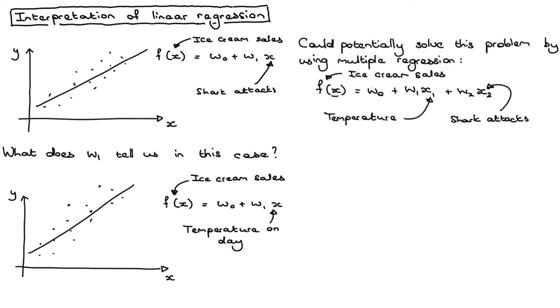You could try and address this problem a little bit by going to a multiple linear regression model where, for example, we're trying to predict ice cream sales, but not just based on the temperature of the day, but on both the temperature of the day, which we can now call X1 and shark attacks X2. And in this case, we can leave it up to the model. In a way, this model can use as much of the temperature information as it wants from this parameter.